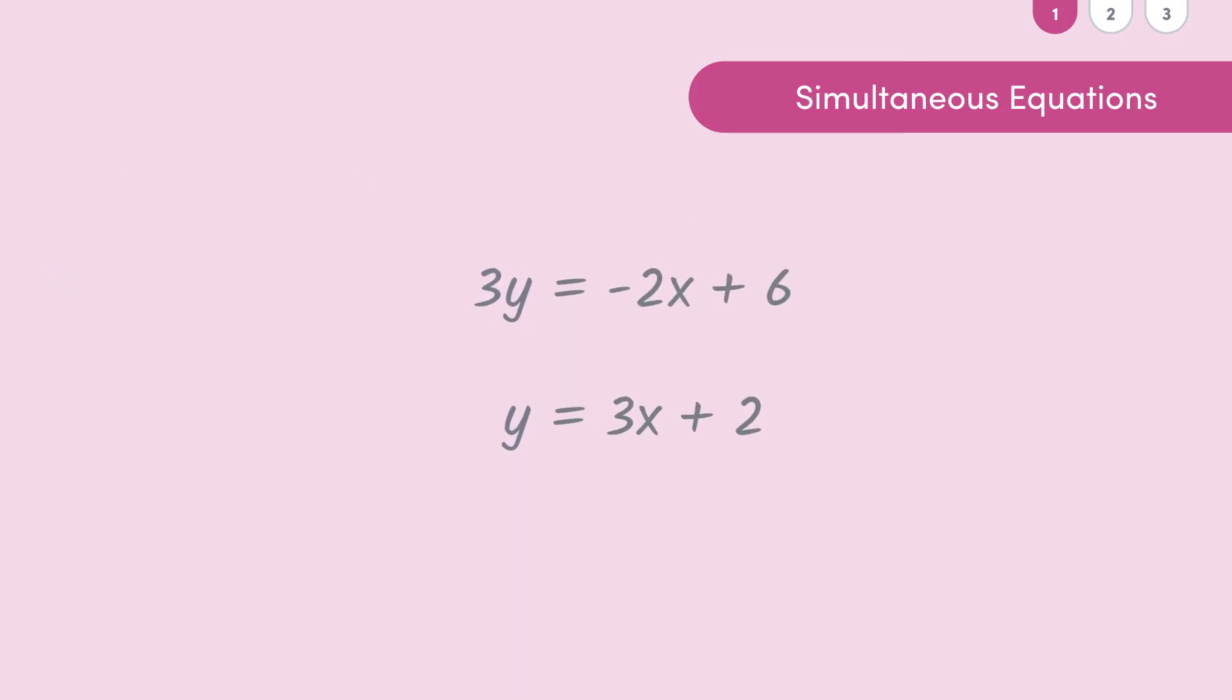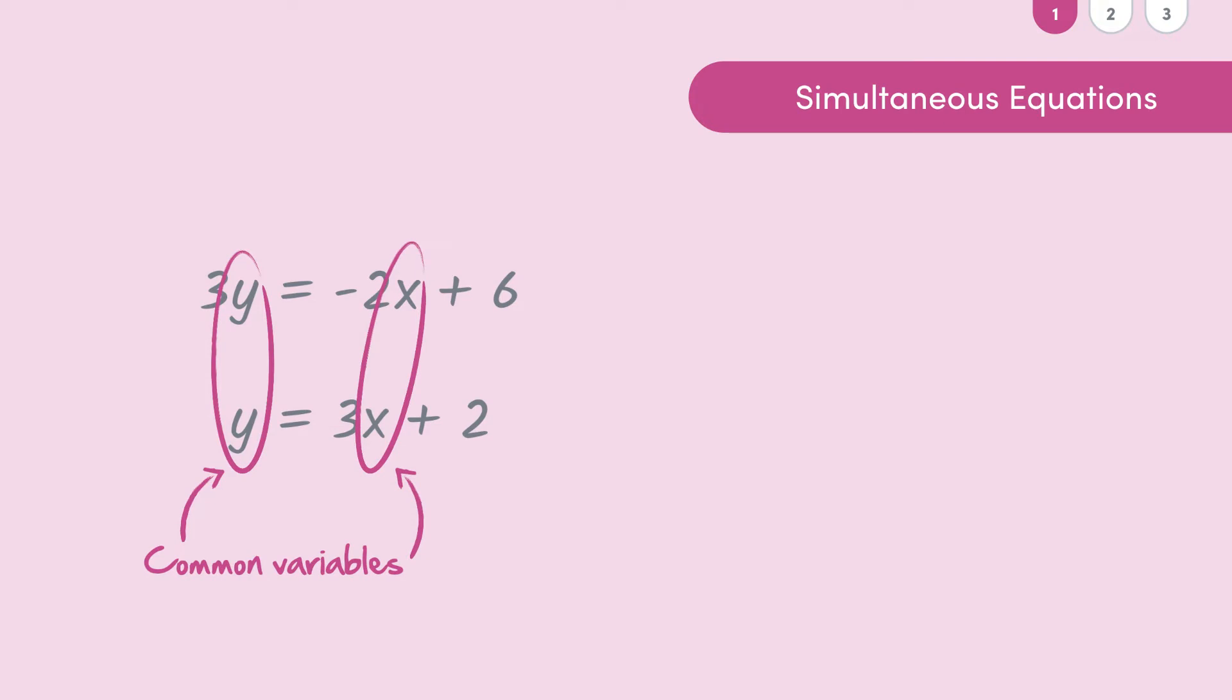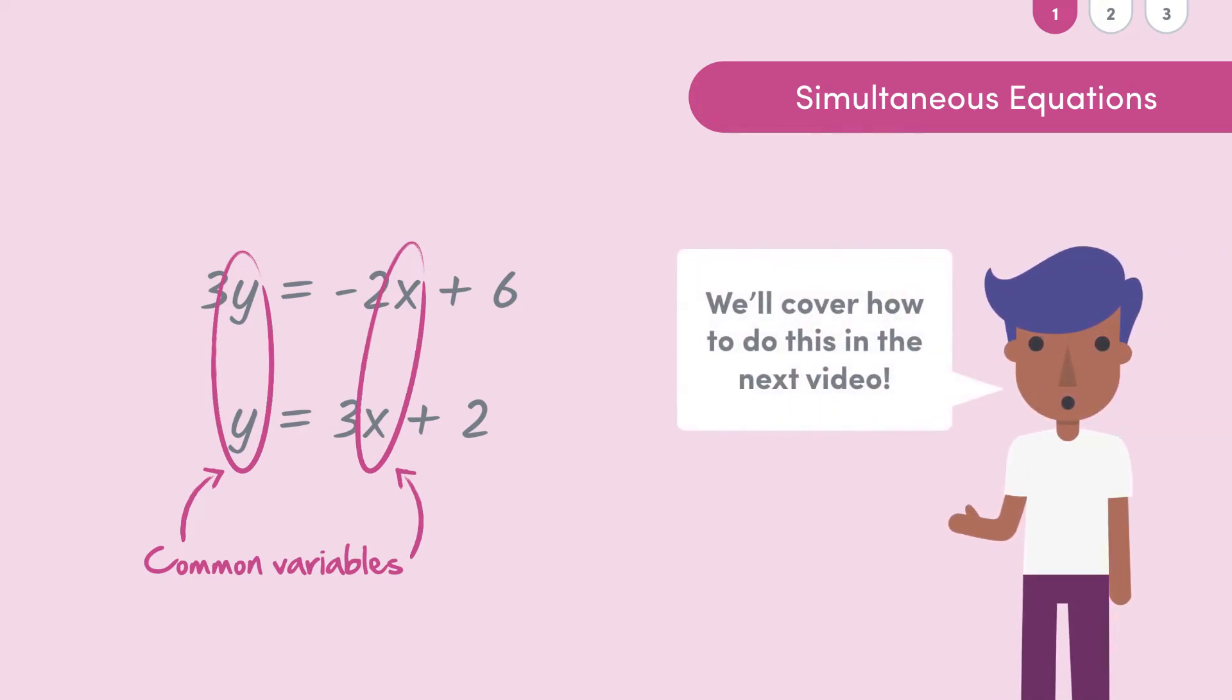When we see two equations like 3y equals minus 2x plus 6 and y equals 3x plus 2, if we were trying to solve these algebraically we'd have to play around with one of the equations so that we can make a common variable the subject of that equation and go along solving from there. But in this video we're not going to bother with solving simultaneous equations algebraically, we'll leave that task for a later video.